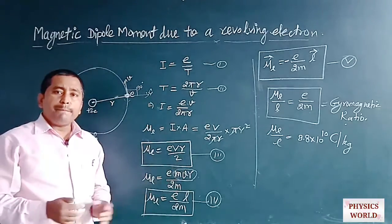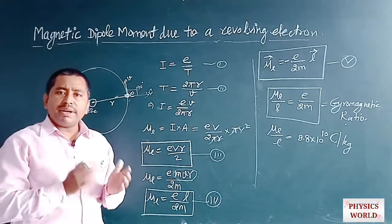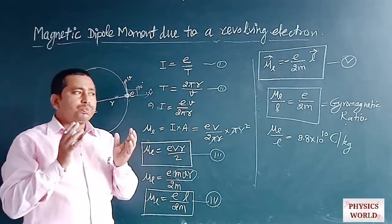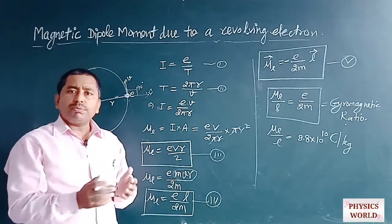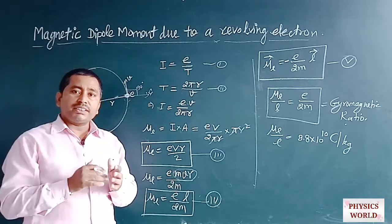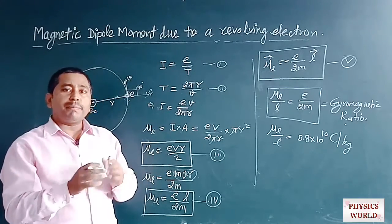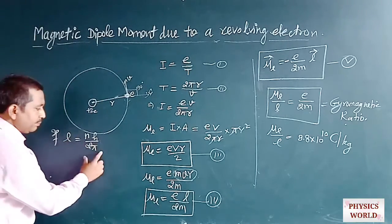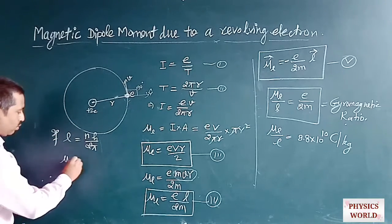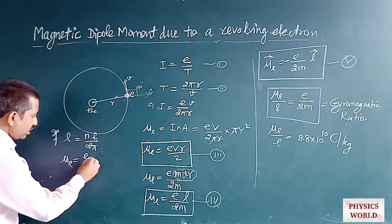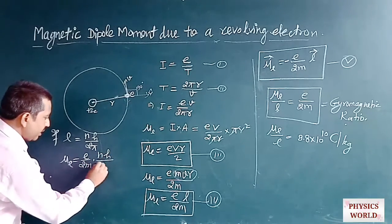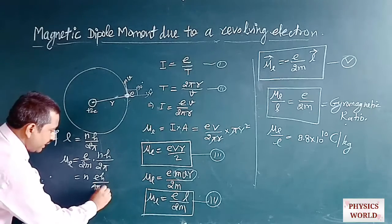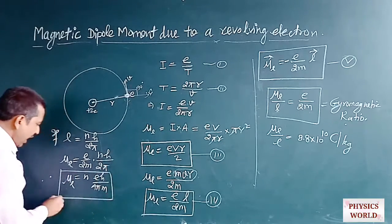Substituting the angular momentum L = nH/(2π) into equation 4, we get μL = (E / 2m) × (nH / 2π) = nEH / (4πm). This is the orbital magnetic dipole moment for an electron in the nth orbit.